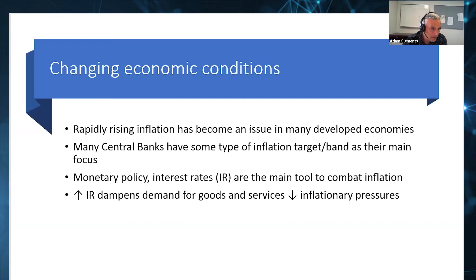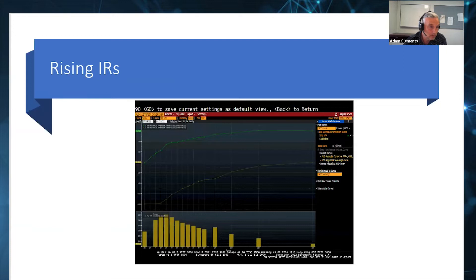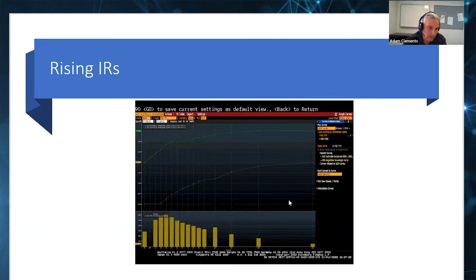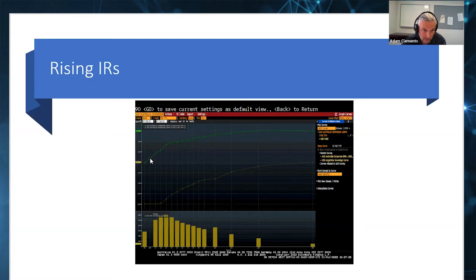Monetary policy and interest rates are the main tools that central banks use to combat inflation. The idea is that interest rate increases are used to dampen demand for goods and services to reduce inflationary pressures. Interest rates have been rising quite rapidly. I've got a snapshot from Bloomberg showing the Australian Commonwealth government securities yield curve. Interest rates at the short end were very close to zero a year ago, and we've seen a rapid increase of around about 2% within the last 12 months. Interest rates are clearly on the way up from historical lows.